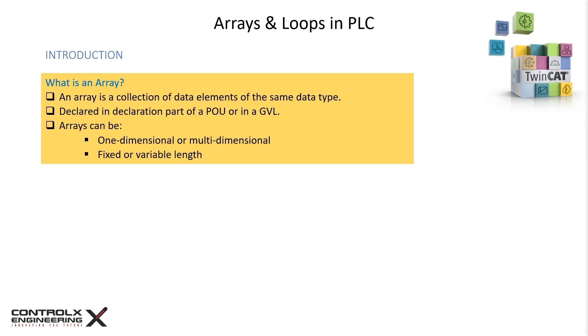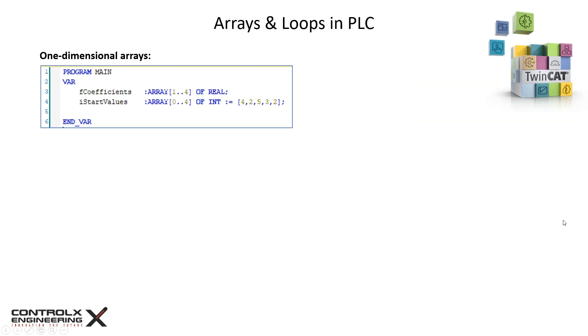What is an array? It is a collection of data elements of the same data type. Arrays are declared in the declaration part of a POU or in a global variable list. TwinCAT supports both one-dimensional and multi-dimensional arrays. They can be of either fixed or variable lengths. Let's look at some examples.